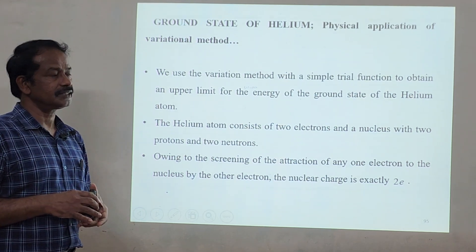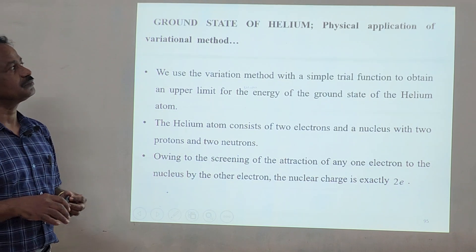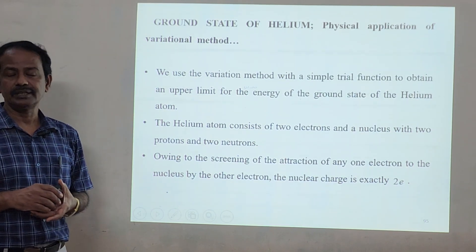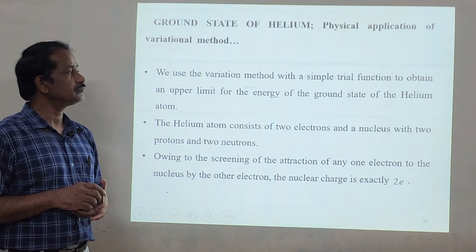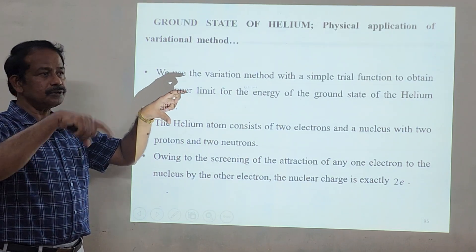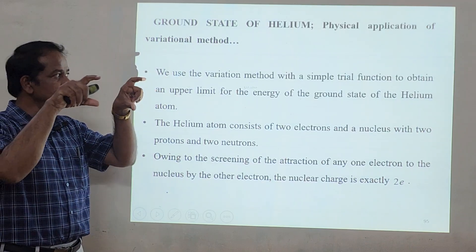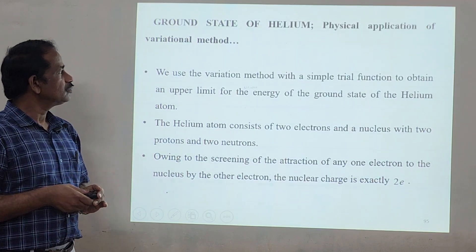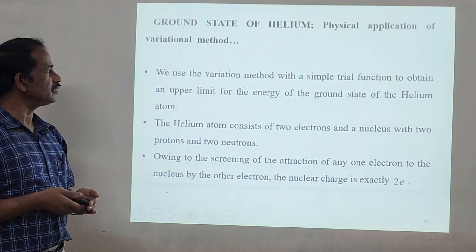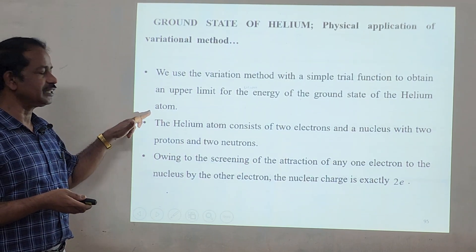Now we will go for the next application, which is the ground state of helium — a physical application of the variation method. We use a variational method with a simple trial wave function to obtain an upper limit for the energy of the ground state of the helium atom.